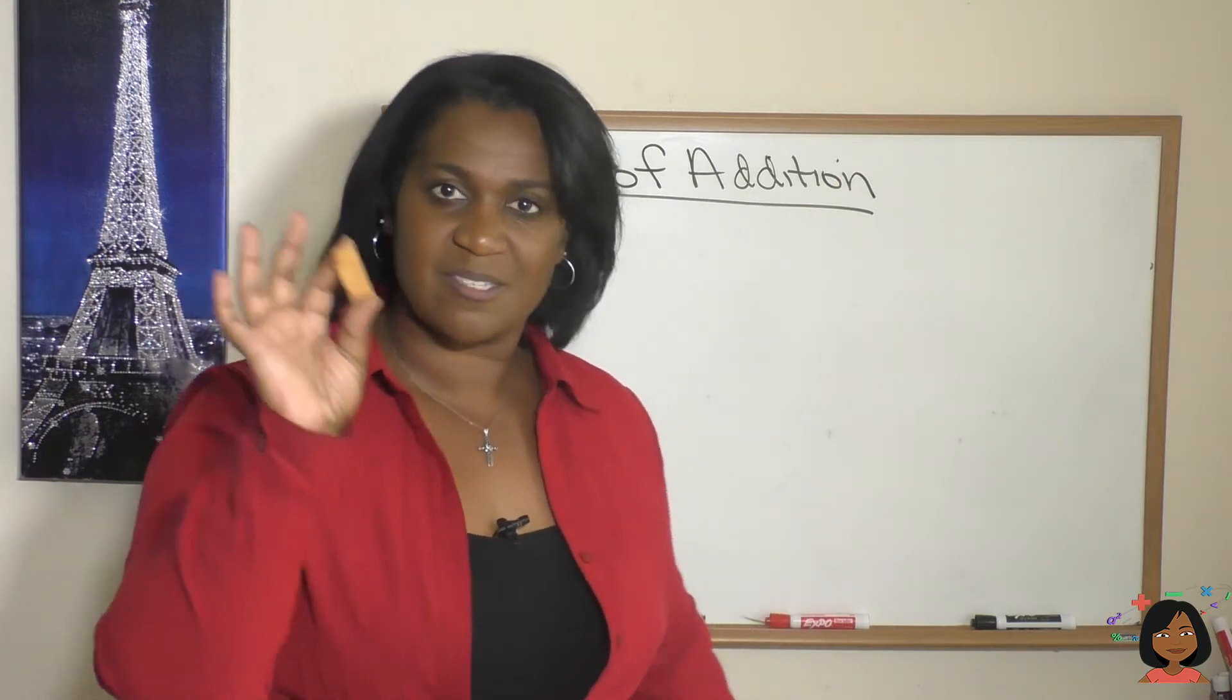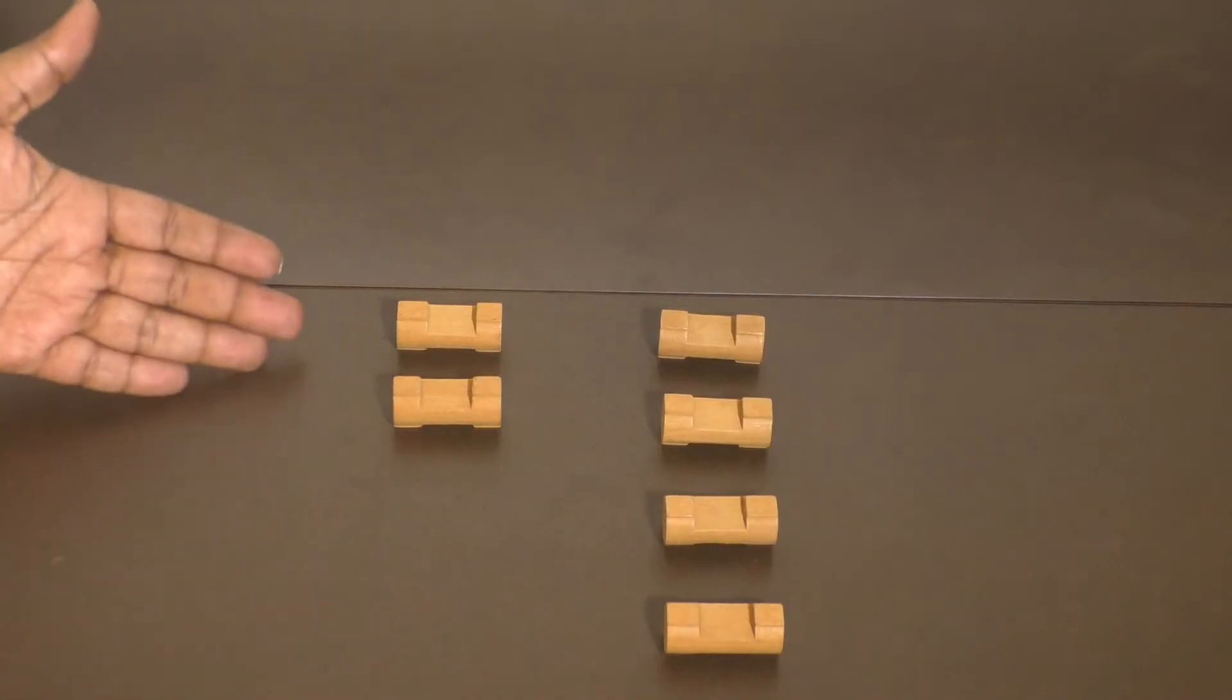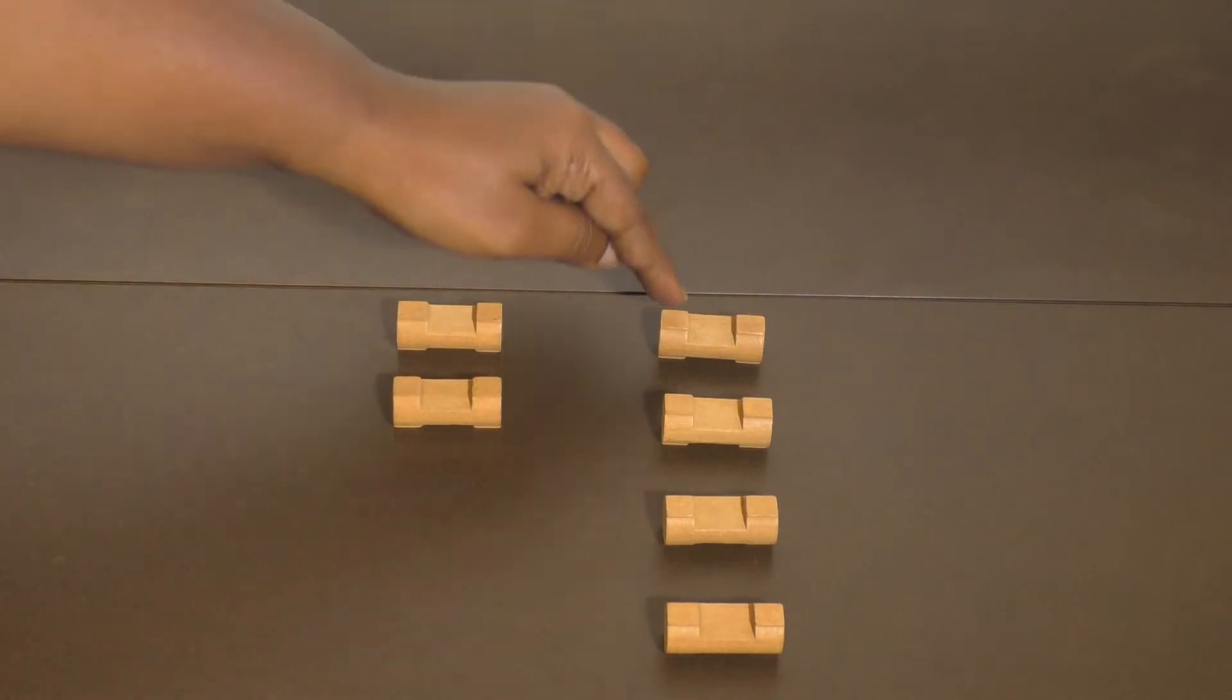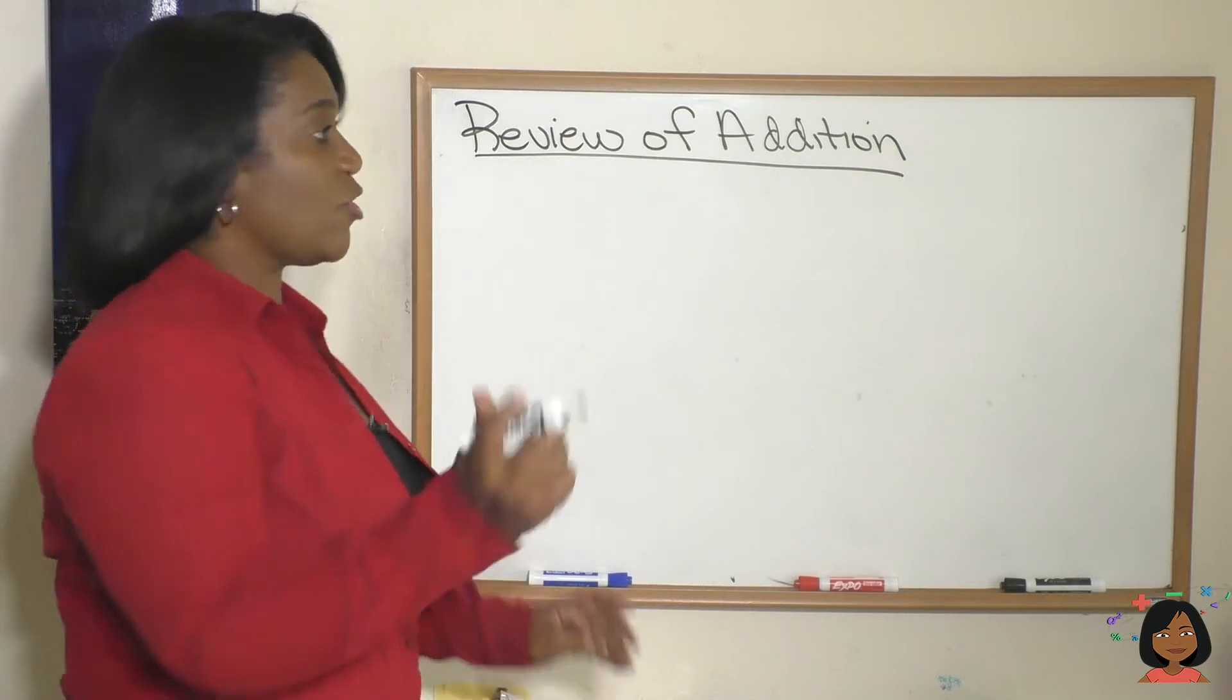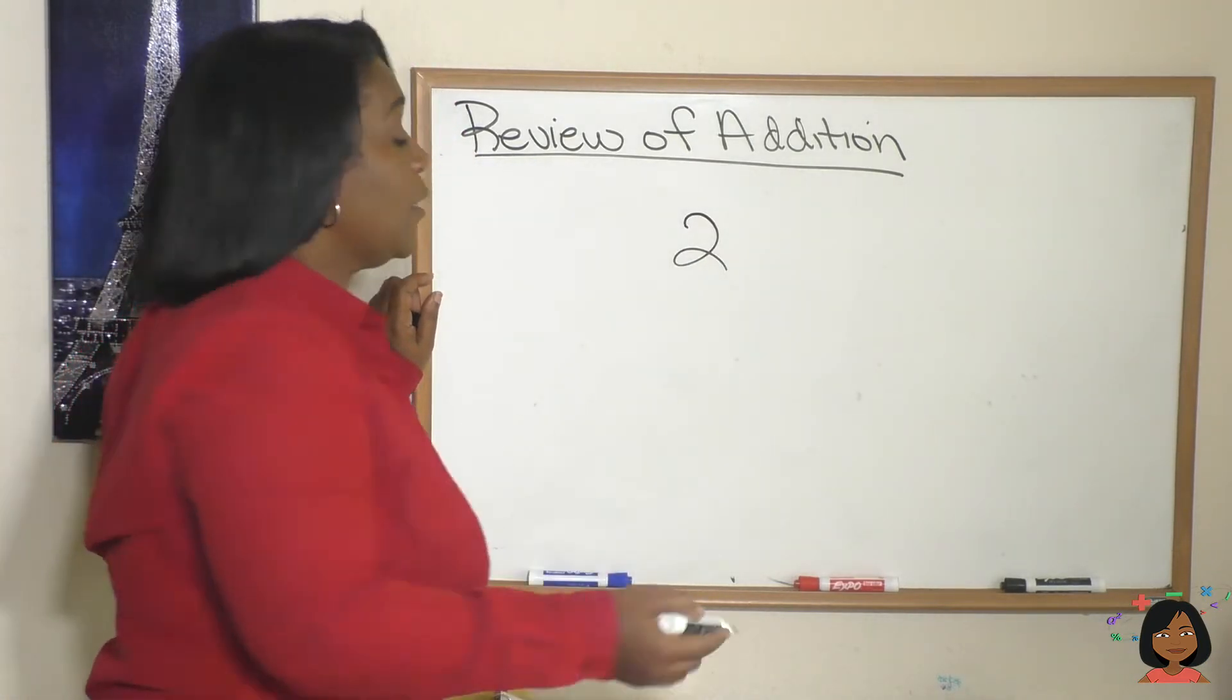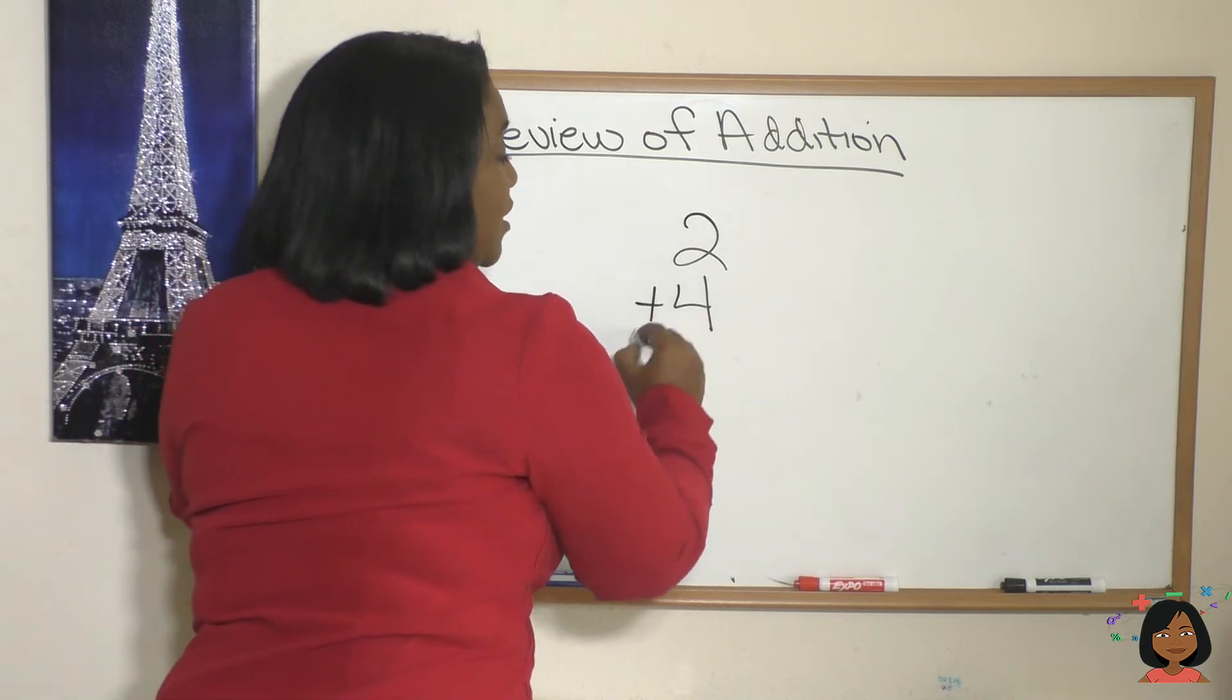Here are our Lincoln logs. First we're going to have two, one-two, and then we want to add four to it, one-two-three-four. So if we added them all together we would have one-two-three-four-five-six, six Lincoln logs in total. So what does that show us? Well, we started out with two and then we wanted to add four more Lincoln logs to it.